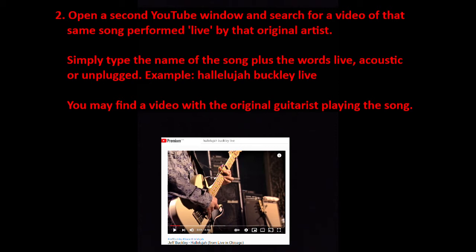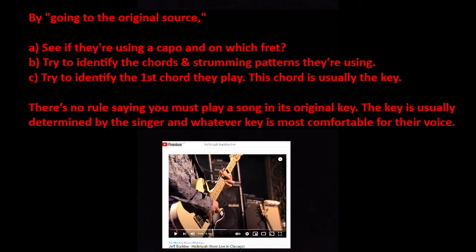You may find a video with the original guitarist playing the song. By going to the original source: A) see if they are using a capo and on which fret; B) try to identify the chords and strumming patterns they are using; and C) try to identify the first chord they play — this chord is usually the key. There is no rule saying that you must play a song in its original key. The key is usually determined by the singer and whatever key is most comfortable for their voice.